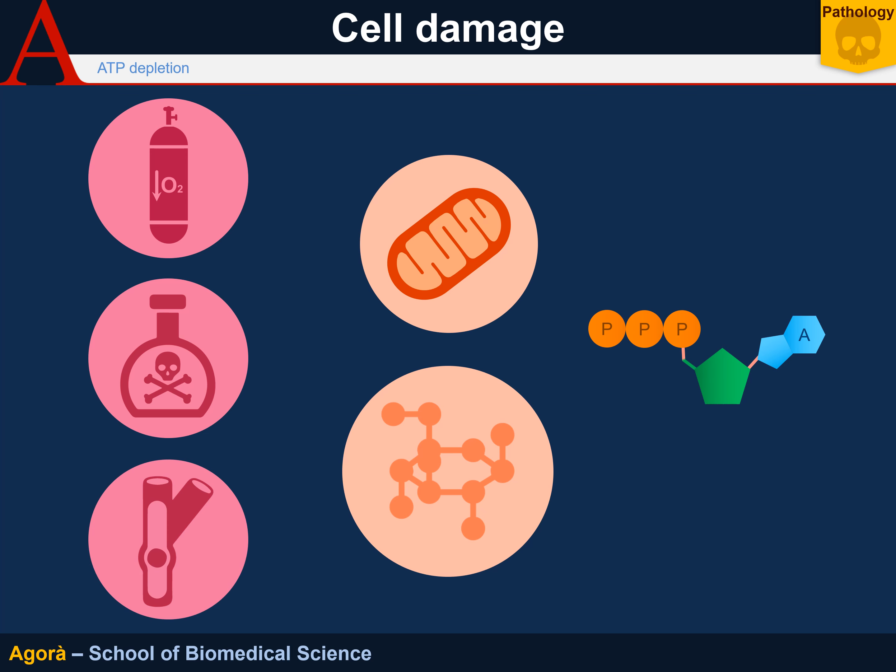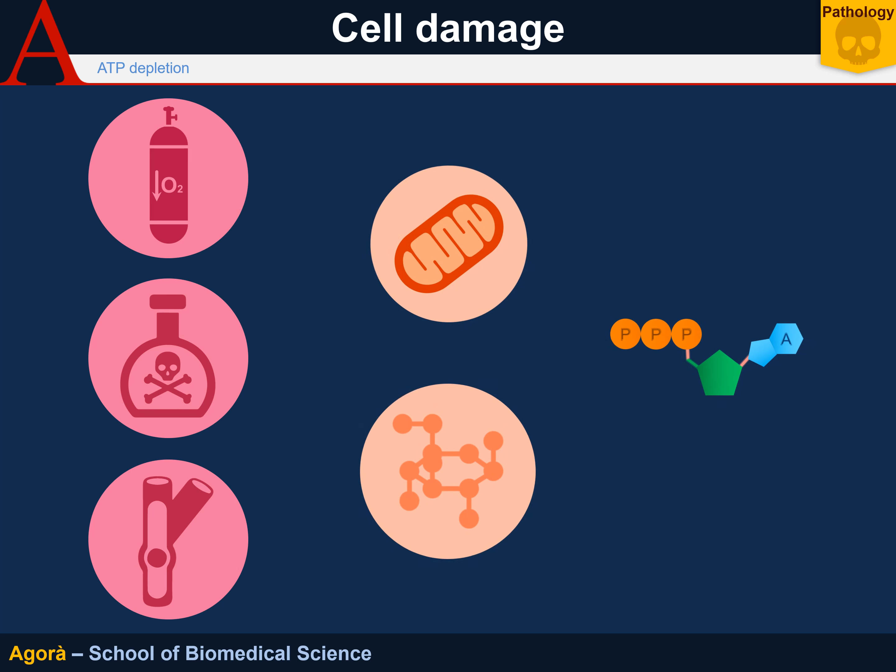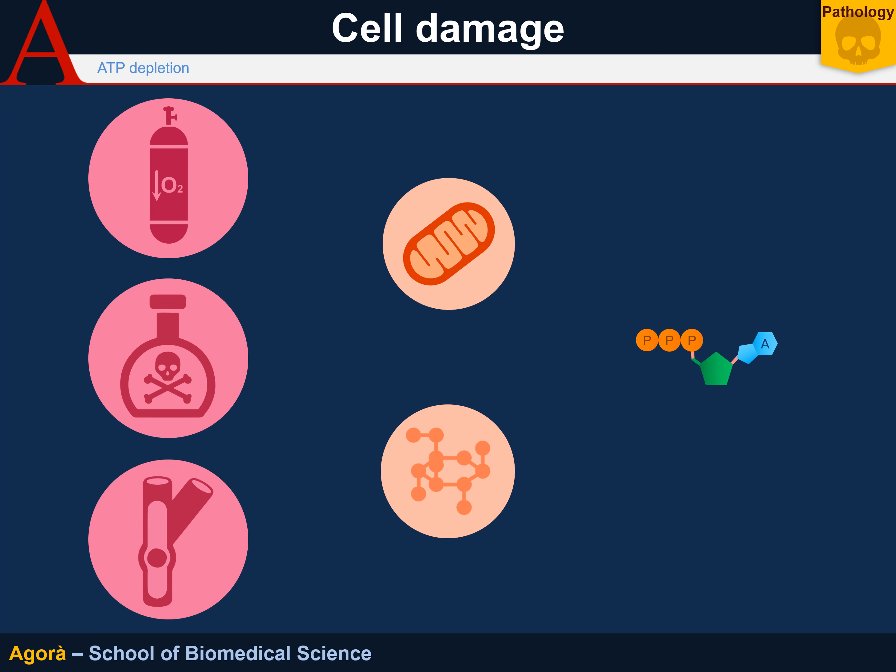Ischemia is different from hypoxia. With hypoxia, cells receive less oxygen, but in the case of ischemia, there is no blood supply at all. This means cells cannot obtain oxygen or other nutrients, nor release waste into the blood circulation. In ischemia, there is a lack of every type of nutrient, including glucose, and consequently glycolysis stands still too.